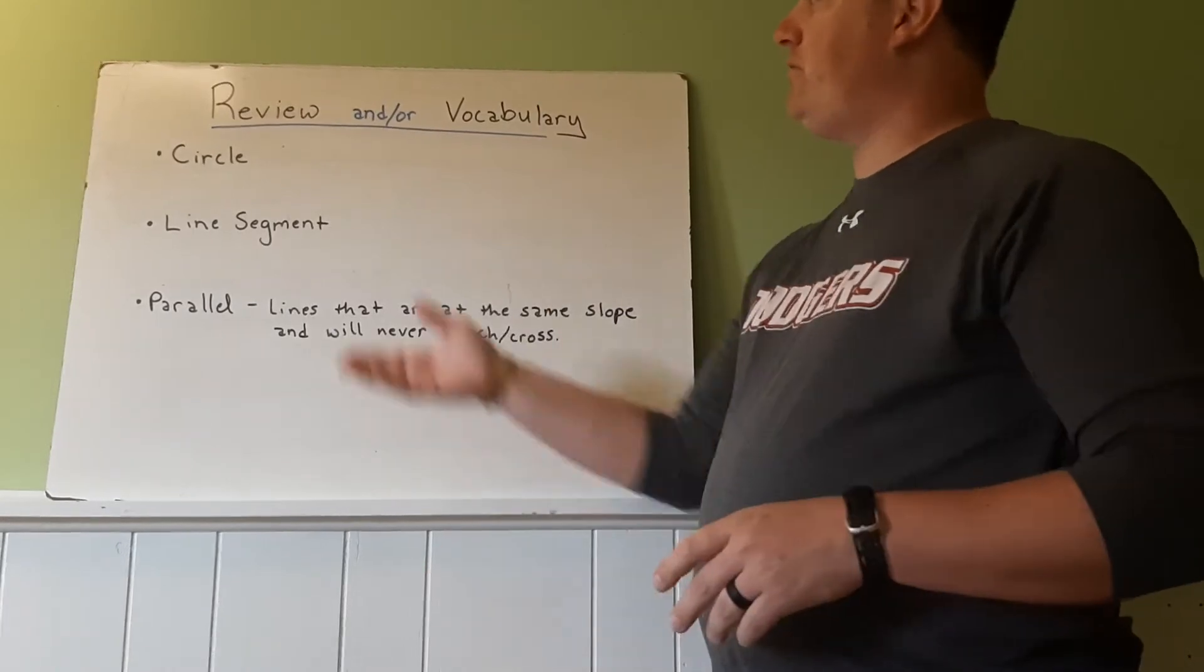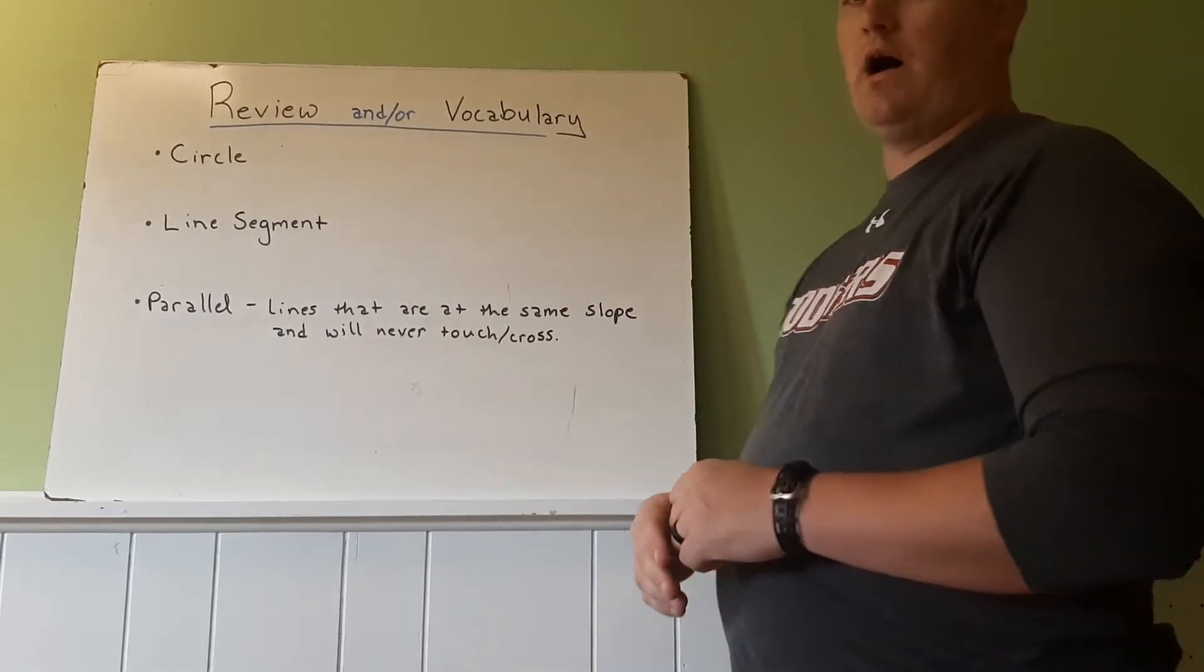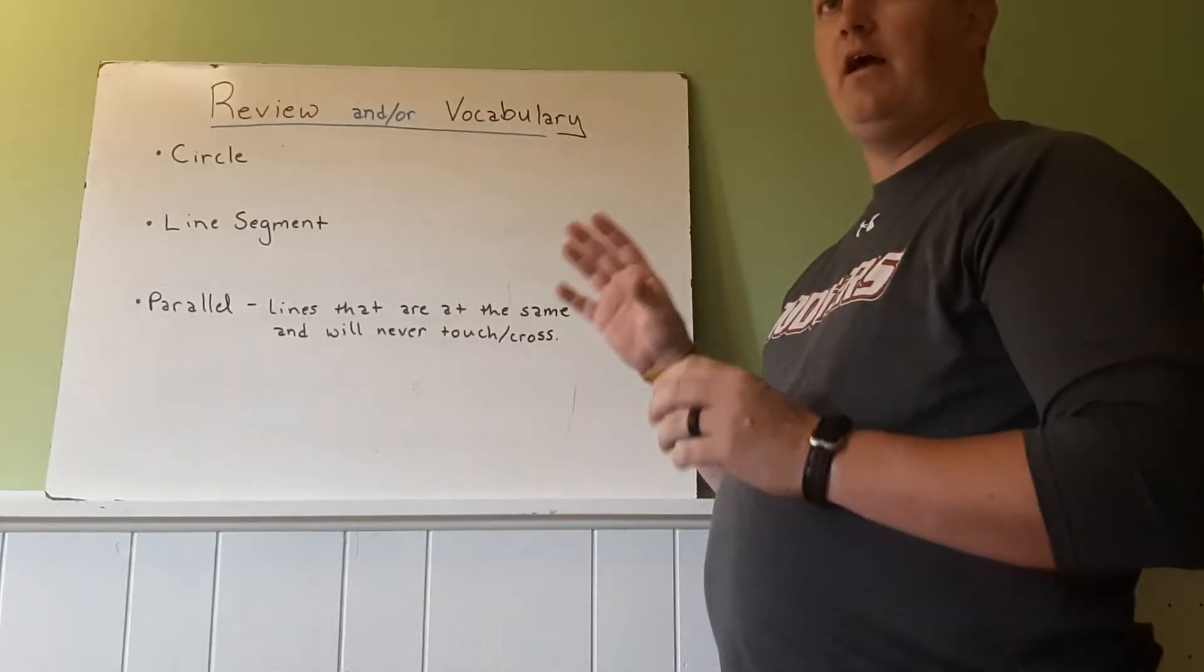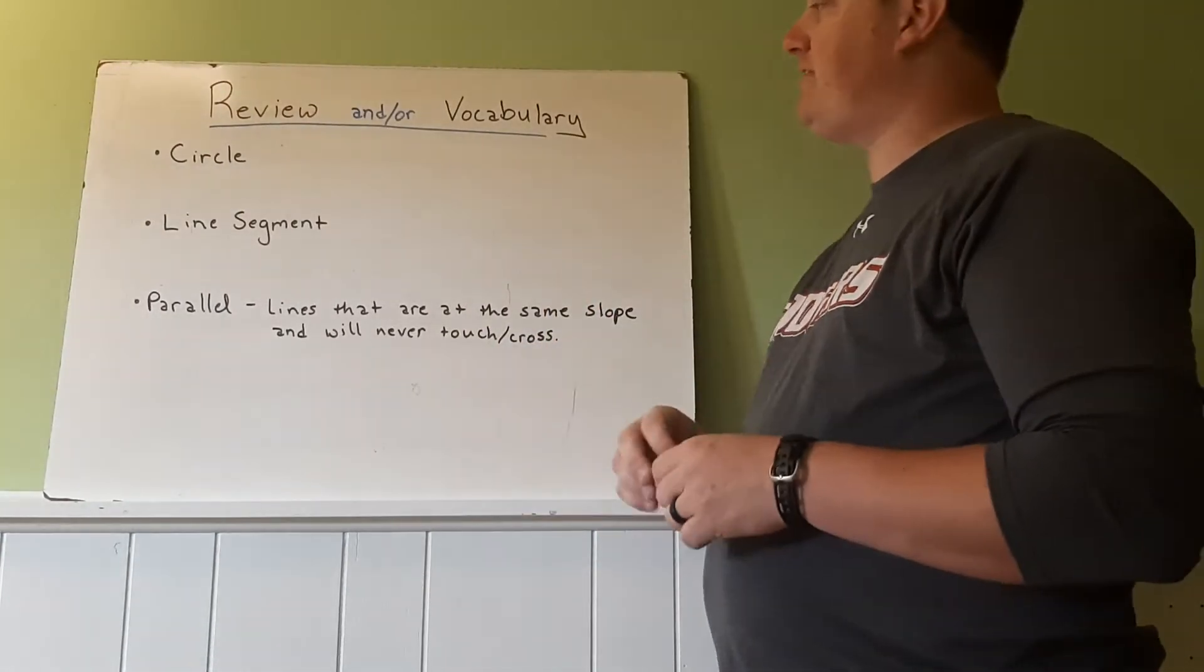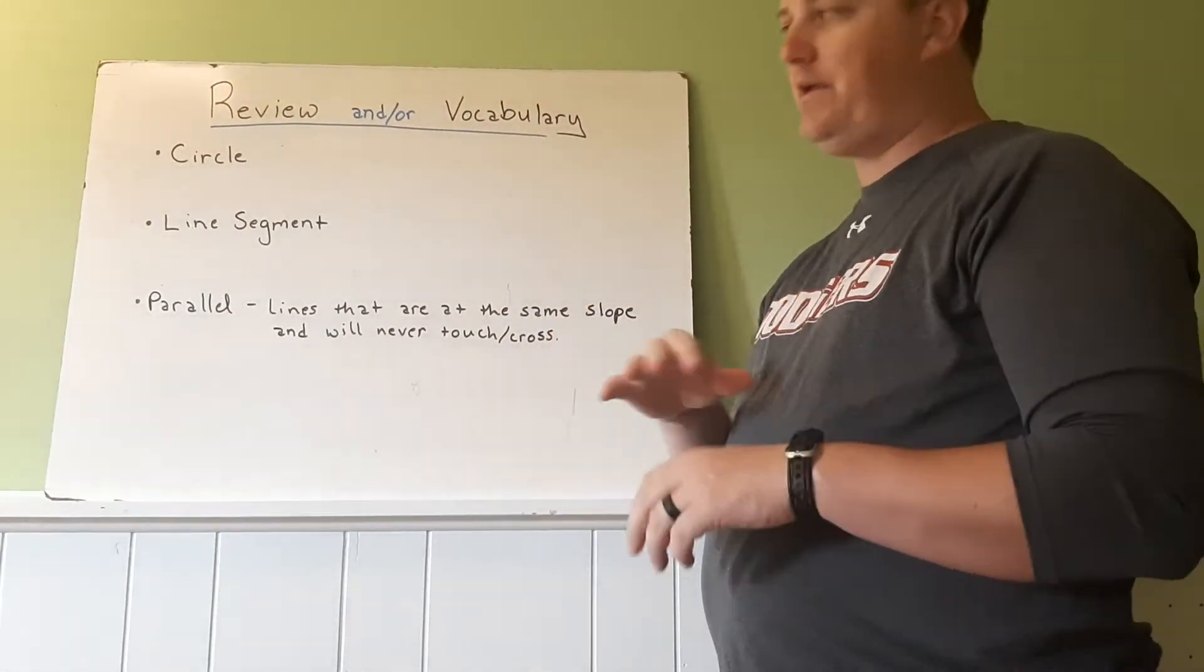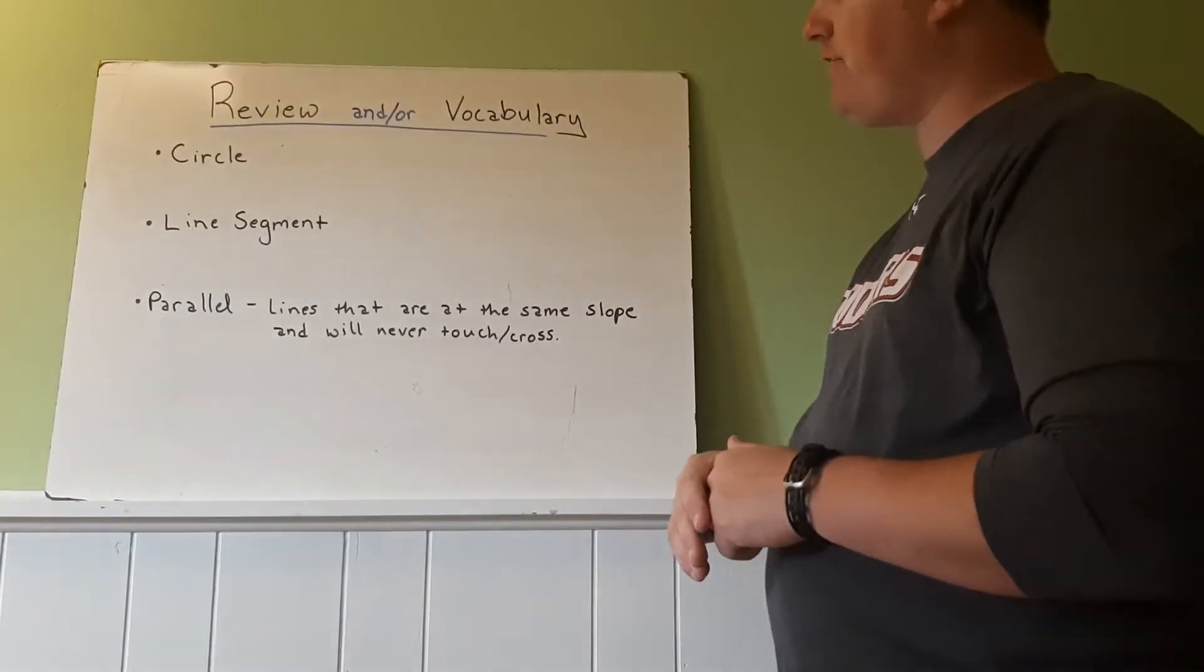So a few things to review. Circle is one word because we're going to use that a lot. Remember that's all the points the same distance from a center. Line segment, remember, is a line with endpoints that's straight. We don't have any curves in these.